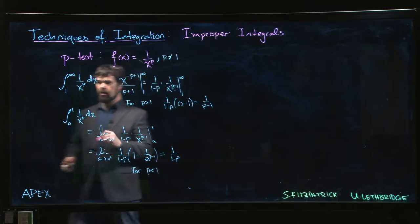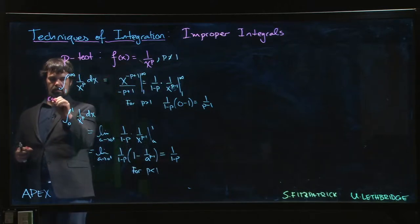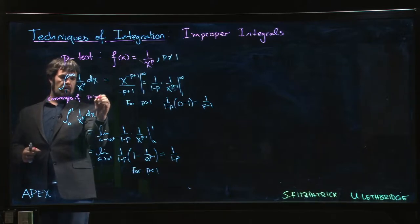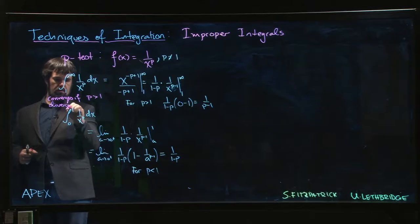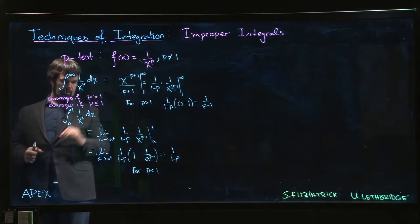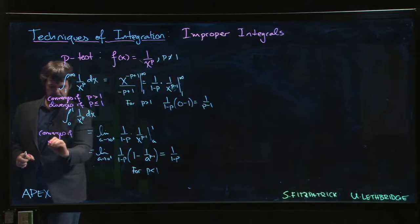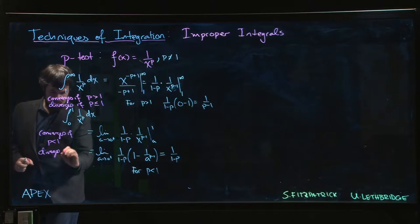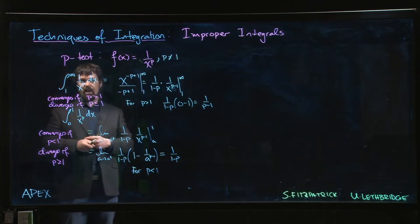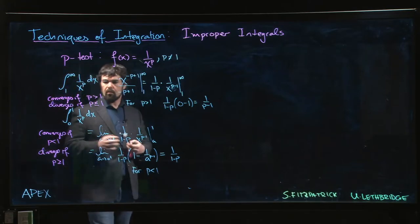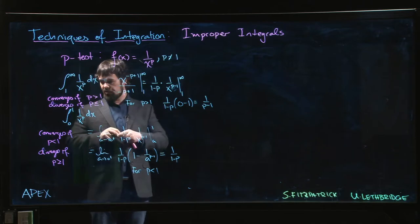So the moral of the story here is that this one is going to converge if p is bigger than 1 and it's going to diverge if p is less than or equal to 1. Whereas this one converges if p is less than 1 and it diverges if p is bigger than or equal to 1. The one case they have in common is p equals 1. Both types diverge if p equals 1.